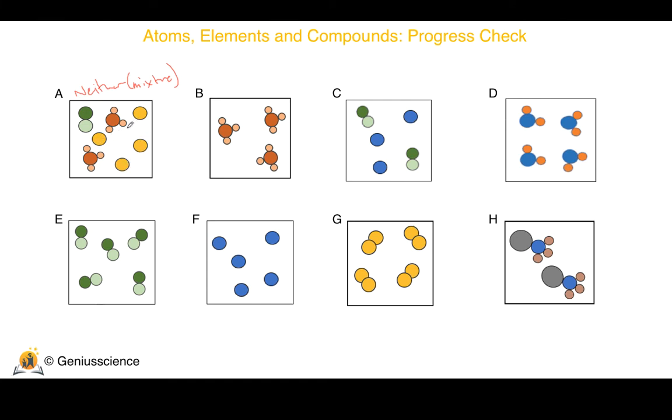You also need to be able to suggest what the different substances in these particle diagrams may be. Notice the yellow particles there, or the yellow atoms, they exist as single atoms. Therefore, substances that exist as single atoms will be something like the noble gases. For example, neon.